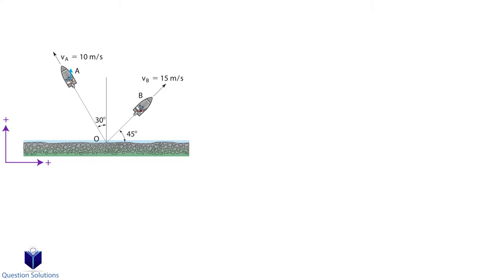Let's start off by breaking the velocity of boat A into two components. We have negative 10 sine 30 degrees and 10 cosine 30 degrees. Let's simplify them.